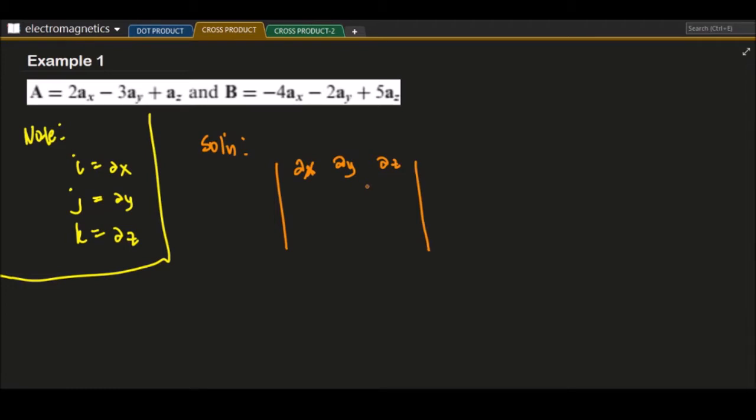For this one, we just use the a sub x, a sub y, and a sub z. The coefficients are 2 and negative 4, then we have negative 3 and negative 2, and we have 1 and 5.